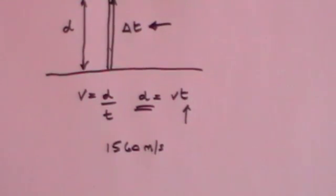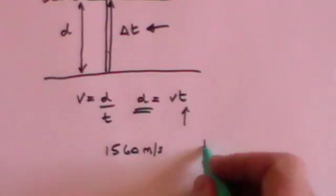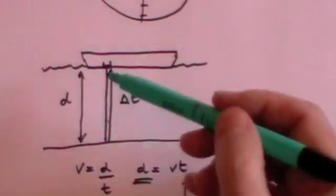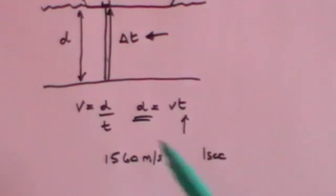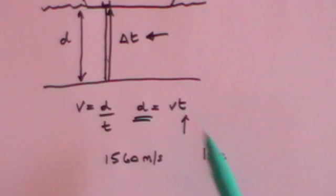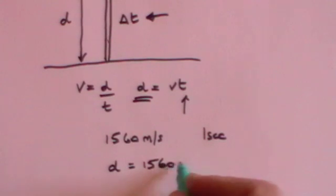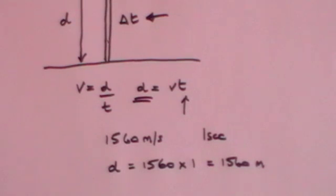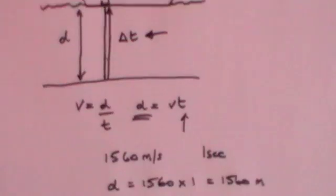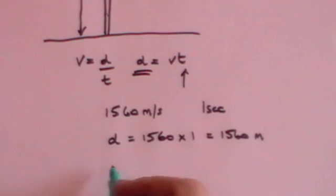So if, for example, delta t was one second, so it took one second for the ultrasound pulse to go down to the bottom of the sea and back up again, then you know that the distance that has been travelled is the velocity, which is 1560 times the time, which is one second. So d is equal to 1560 times 1, which is 1560 meters. But that is not the depth of the sea, because that's the distance it travelled there and back. The depth of the sea is half of that, and half of that will be 780 meters.